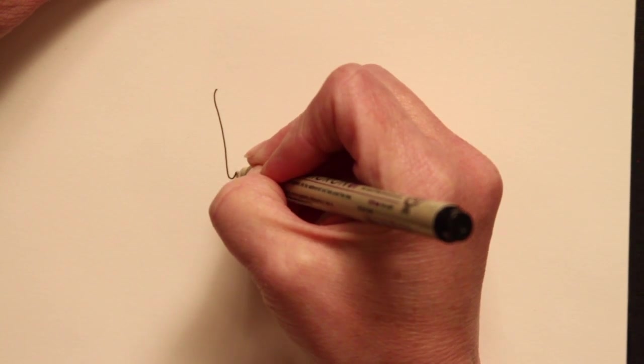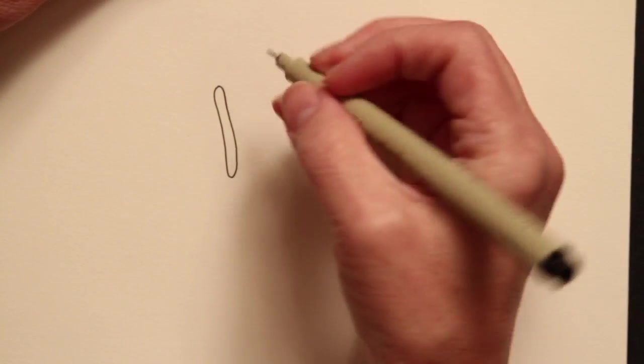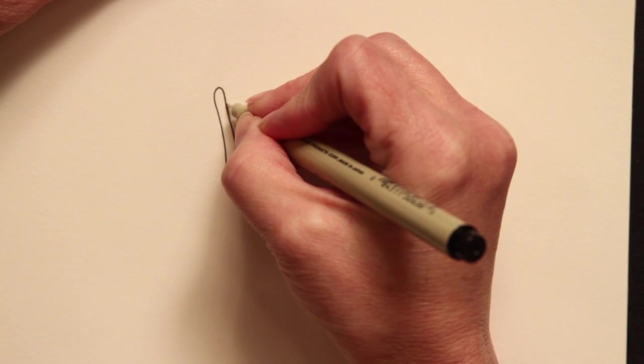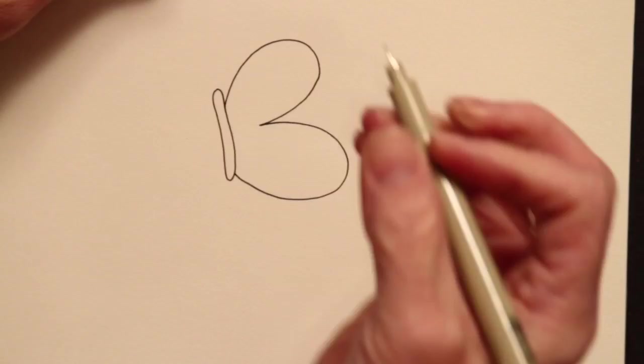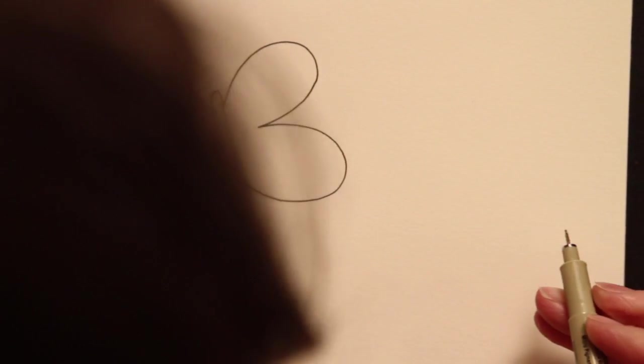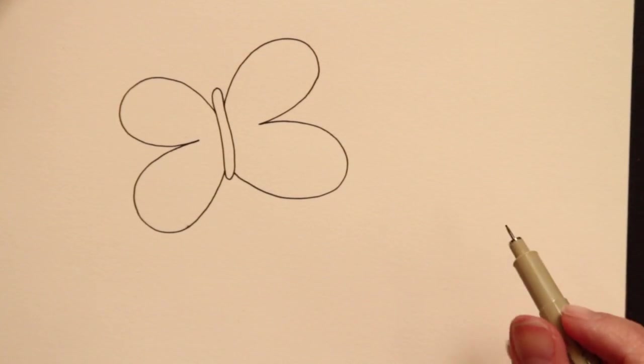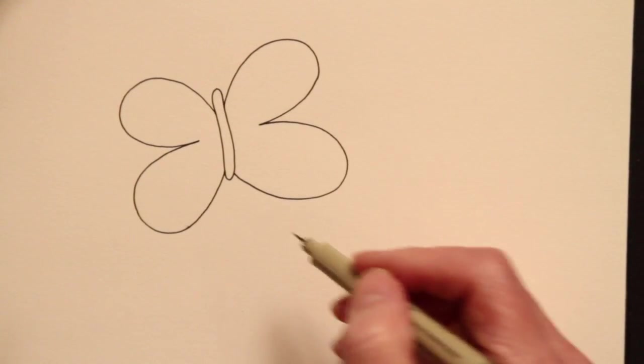Do a long skinny caterpillar shape in the middle. Come out in a curve for the wing and then do the same here. Now I look at my butterfly and I think, wow, that side's a lot bigger than this side.